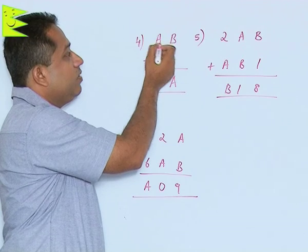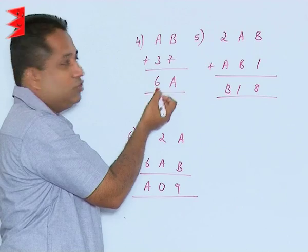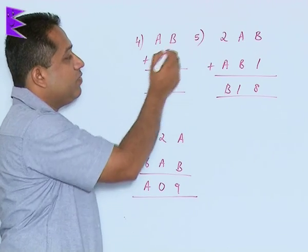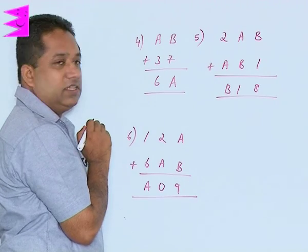If 1 gets carried over, if we are assuming 3, then 3 plus 3 is 6. 6 plus 1 will give us 7. So we should not have anything carried over from the units place to the tens place. So we cannot take the value of A as 3.